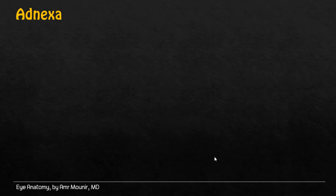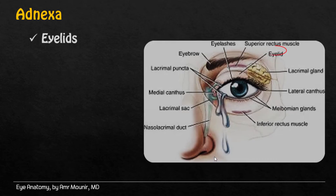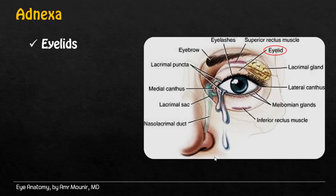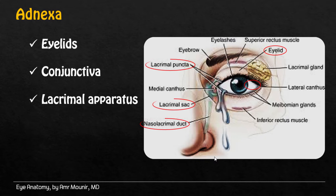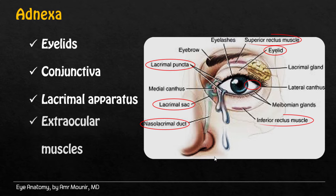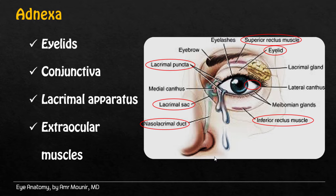Adenexia is formed of eyelids, conjunctiva, lacrimal apparatus, and extraocular muscles.